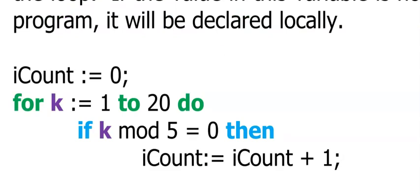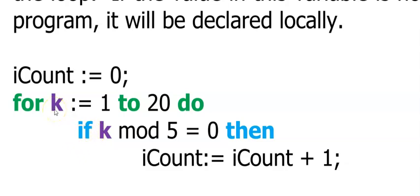This example shows you how to count the number of multiples of 5 from the numbers 1 to 20. I have a for loop running from 1 to 20, so every time my loop executes, k will change from 1 to 2 to 3 to 4. For the first four instances of k, the mod by 5 will not be equal to 0 because there will be a remainder when dividing by 5. When k changes to 5, 5 mod 5 will give me 0, and I want to count that value because it is a multiple of 5. So I use my counter: iCount is assigned to iCount plus 1.